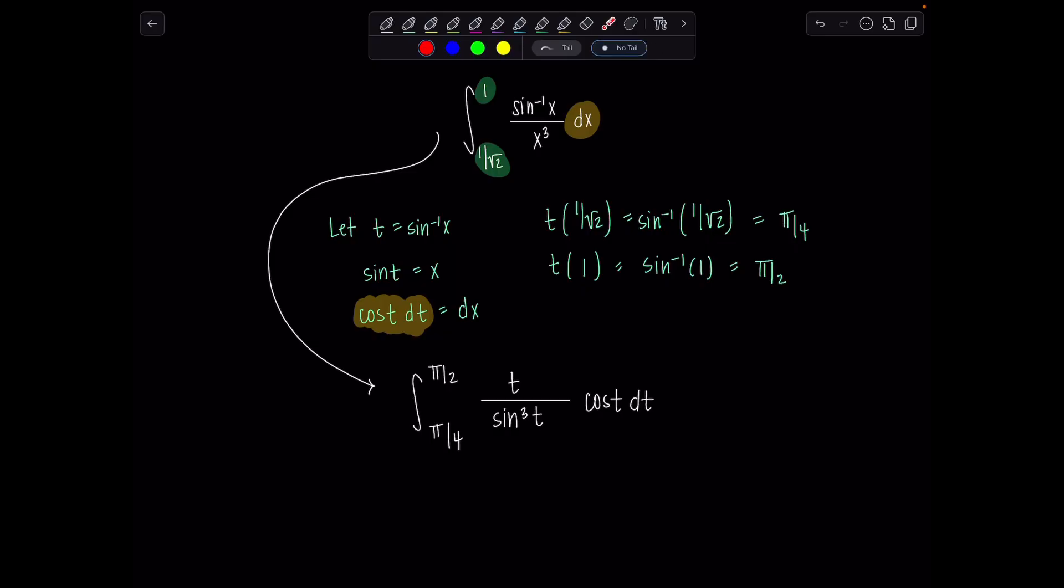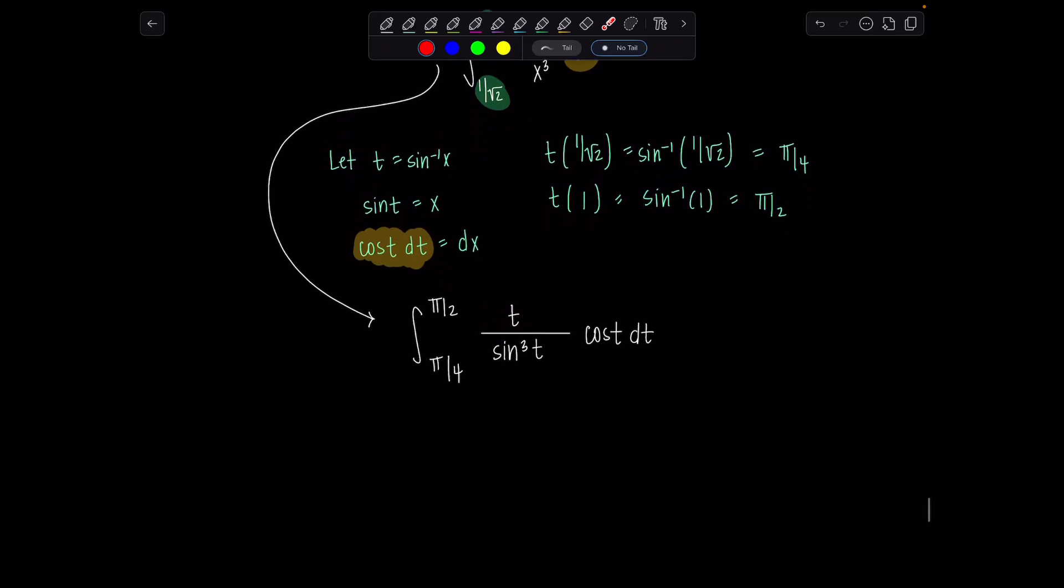At this point, what's jumping out at me is we need to do integration by parts because we basically have trig functions and a polynomial, a not exciting polynomial, but it is one. And in order to basically get this guy out of the picture, we need to use integration by parts.